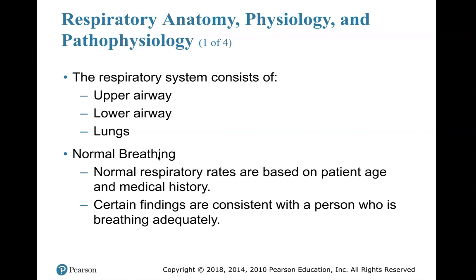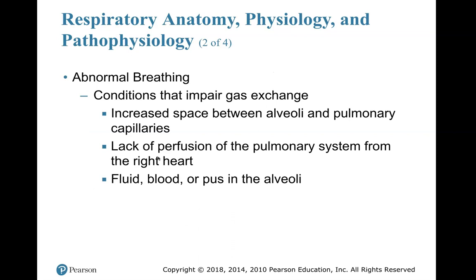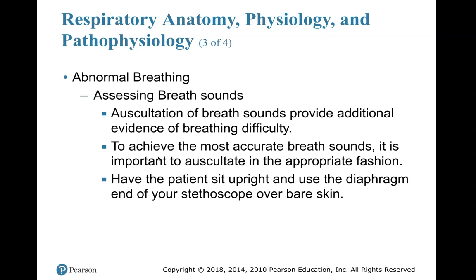Normal breathing — normal respiratory rates are based on a patient's age and medical history. Certain findings are consistent with a person who is breathing adequately. Abnormal breathing includes conditions that impair gas exchange, increased space between the alveoli and pulmonary capillaries, lack of perfusion of the pulmonary system from the right heart, and fluid, blood, or pus in the alveoli. When we assess breath sounds, we need to auscultate. Breath sounds provide additional evidence of breathing difficulty.